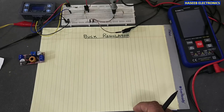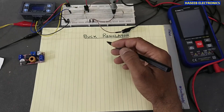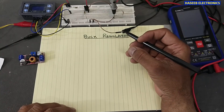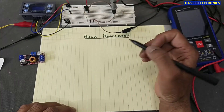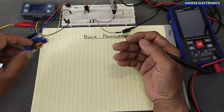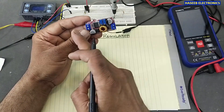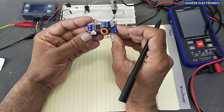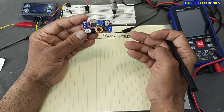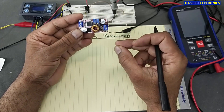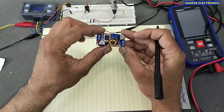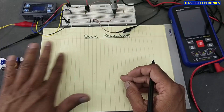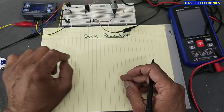Welcome back to my channel. Today we will discuss a very simple technique in switch mode power supplies — that is the buck converter, or buck regulator. It is a DC to DC converter. It receives DC voltage, steps down the voltage to our required level, and regulates it. We will see the theory and discuss the regulator in the easiest steps.